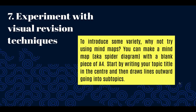Number seven: experiment with visual revision techniques. To introduce some variety, why not try using mind maps? Make a mind map — also known as a spider diagram — on a blank piece of A4 paper. Start by writing your topic title in the center, then draw lines outward going into subtopics. Another option is to use colored overlays, which are thin pieces of acetate that you can place over text to help you understand the chronicity of ideas, especially when dealing with mathematical equations in physics or step-by-step processes in biology such as mitosis or meiosis.